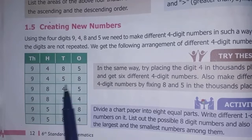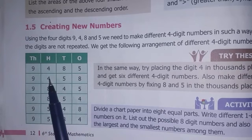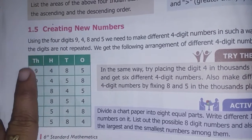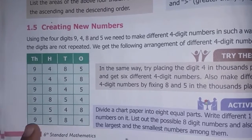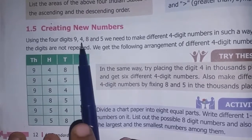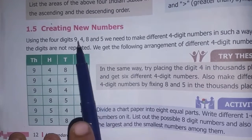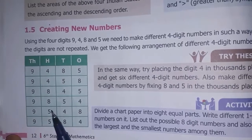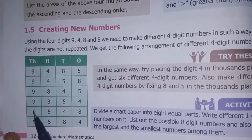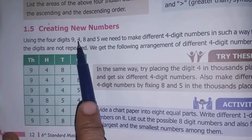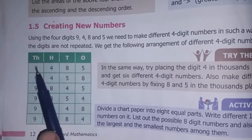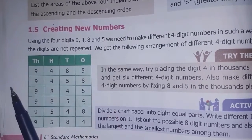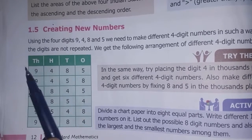If 9 is in the 1000s place, the remaining digits 4, 8, 5 can be arranged as: 9485, 9458, 9845, 9854, 9548, 9584 — 6 numbers. If 4 is in the 1000s place, arrange 9, 8, 5 in the remaining places — again 6 numbers. If 8 is in the 1000s place, there are 6 numbers. If 5 is in the 1000s place, arrange 9, 8 — again 6 numbers.